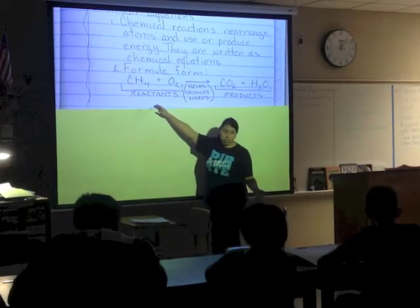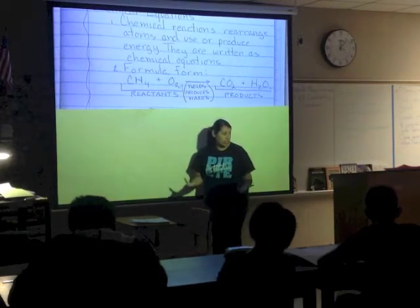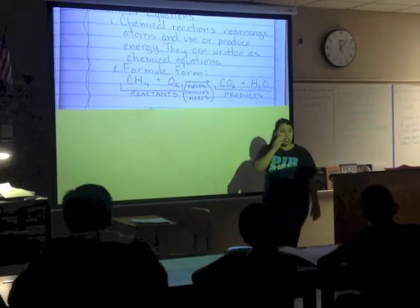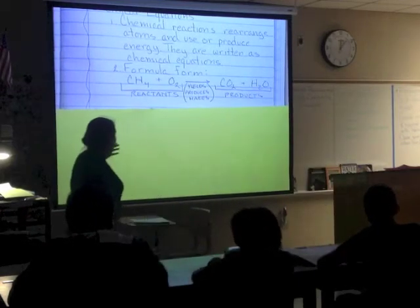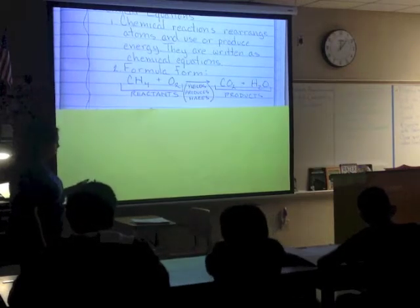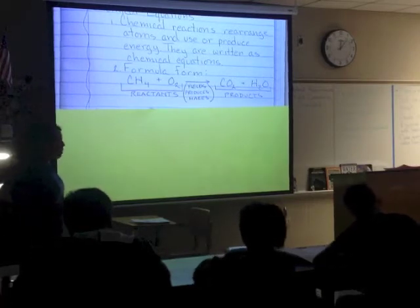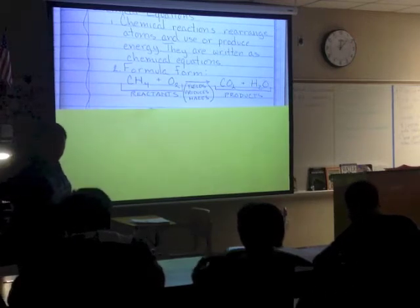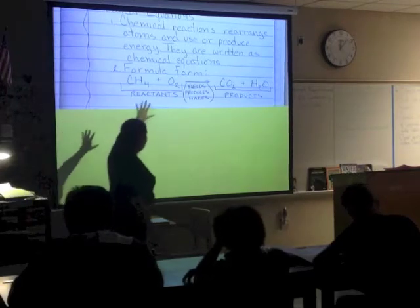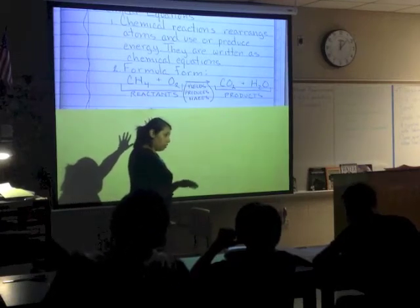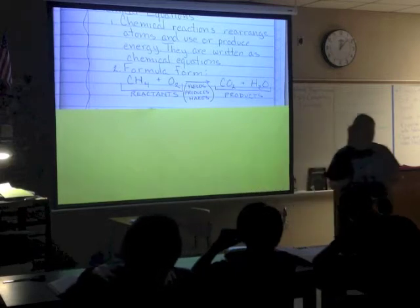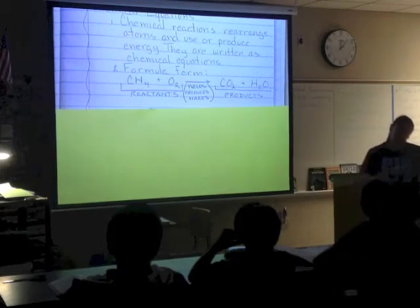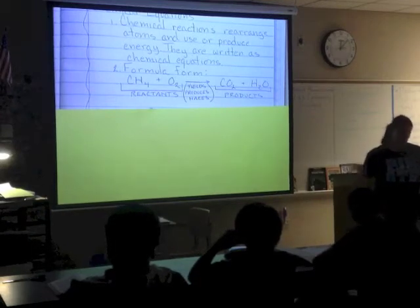What you put in — we don't call those ingredients in science, we call those reactants. They are reacting, so they're reactants. What comes out are your products — it's what you're making. The reactants, methane gas, are reacting with oxygen gas to yield one molecule of carbon dioxide and one molecule of water. You have to know that the things on the left are reactants — the things going in — and the things on the right are the products, the things coming out. It's called a chemical equation, and just like in math you have your left side and your right side.